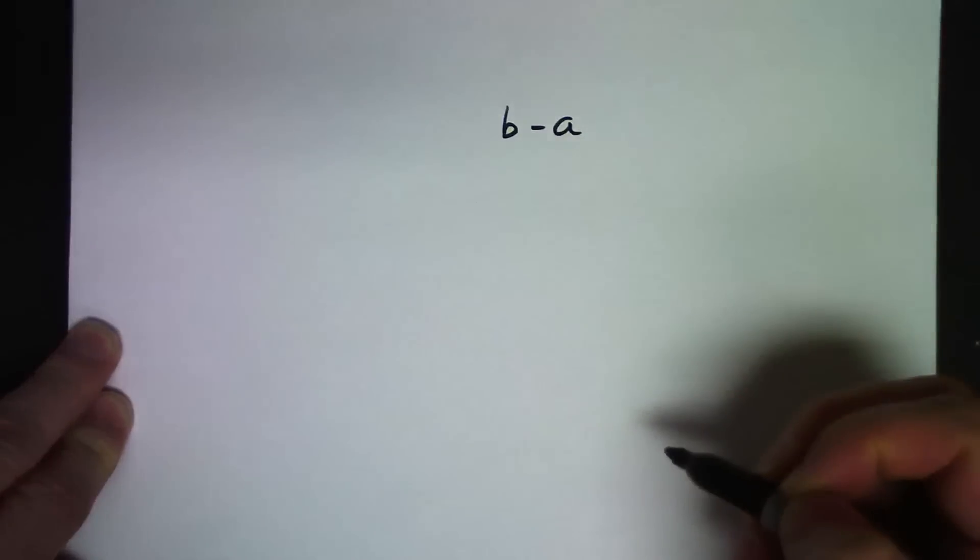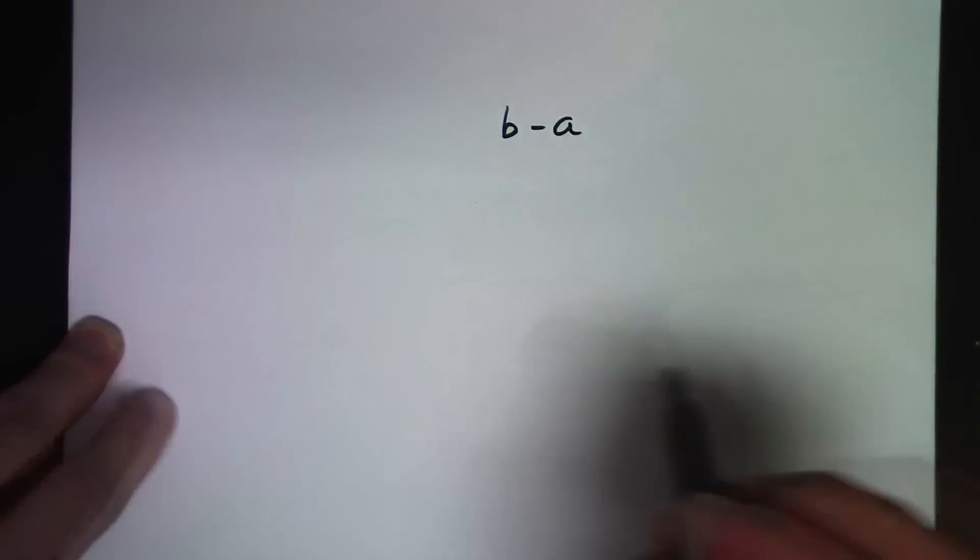There was a question about the constant difference algorithm and why that works. I think the first place to start is to look at what a subtraction is telling us. So, B minus A. What is B minus A?